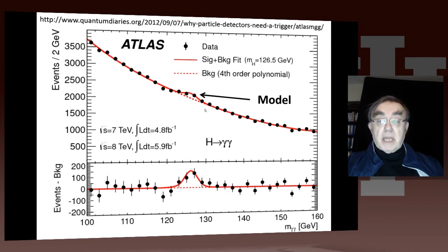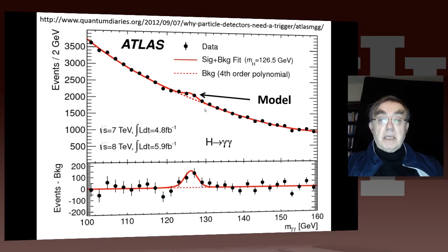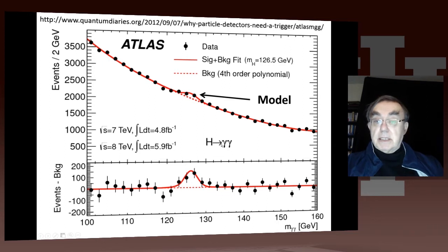The dashed line is the background — very smooth, assuming it would have no particular structure at any given mass. And then superimposed on that is the signal, which is interpreted as the Higgs decaying, in this case, to two photons.